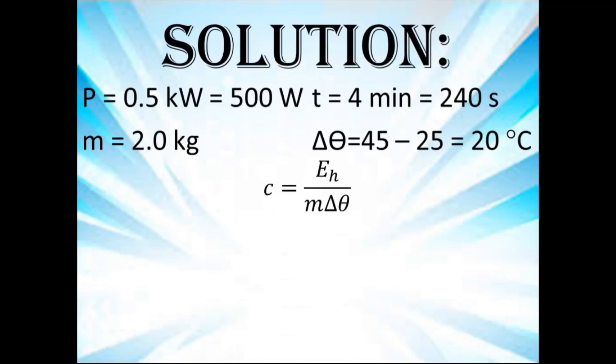Our formula is the heat energy equals mass times specific capacity times change in temperature. When we rearrange that to make the specific heat capacity the subject of the formula, you have c equals heat energy divided by mass times change in temperature. The heat energy used here is the same as the electrical energy used by the appliance because of the principle of conservation of energy. Energy cannot be created nor destroyed, it is only transformed from one form to another.